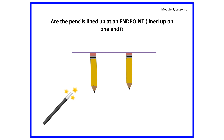I want you to see and make sure that the pencils are lined up at an end point. Remember what an end point is? An end point is the end of each object. I do see that the end of each object is lined up by this purple line right here. So yes, that is a correct way to measure.